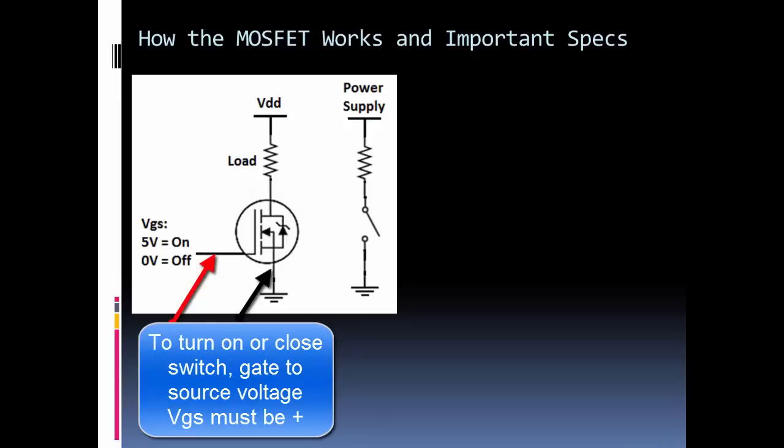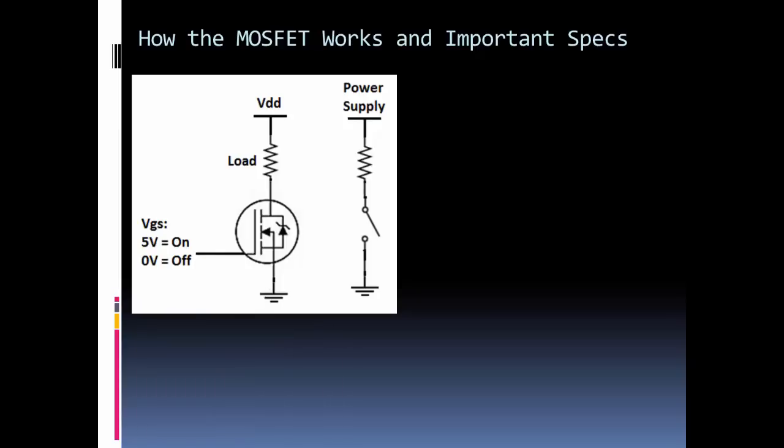If we connected a DMM between our gate and the source, we want that to be a positive voltage to turn it on. In most cases, you'll use a 5-volt level. To turn it on, we would close the switch, apply 5 volts, our switch closes, current flows from VDD through the load, through the MOSFET to ground.